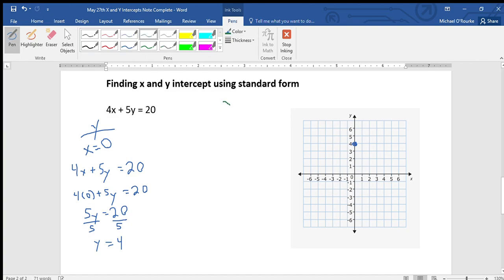Let's find our x-intercept. At the x-intercept, the value of y is 0. So let's plug it in: 4x plus 5 times 0 equals 20. So 4x equals 20. Divide by my coefficient, and x equals 5.